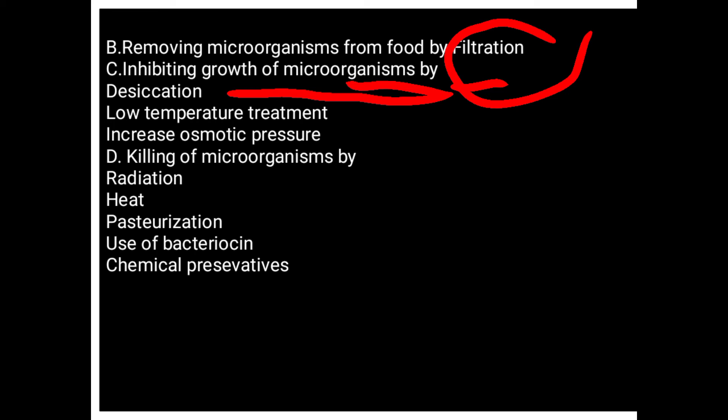تیسرا طریقہ ہے: inhibiting growth of microorganisms۔ اگر microorganism خوراک میں آ جائے تو ہم اس کی growth کو inhibit کرتے ہیں۔ یہ کام desiccation، low temperature treatment، اور osmotic pressure کو increase کر کے کیا جاتا ہے۔